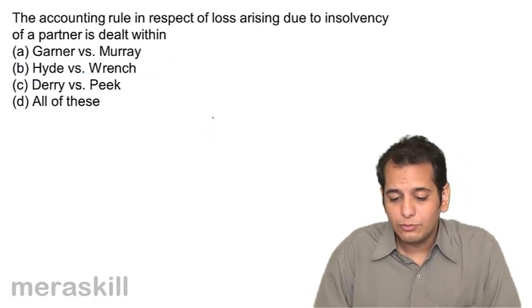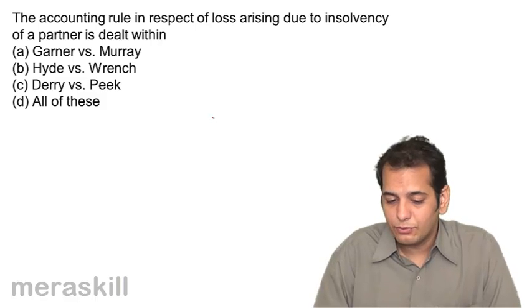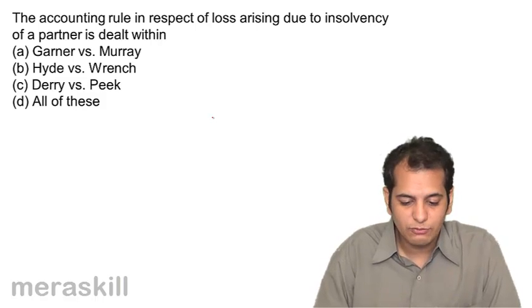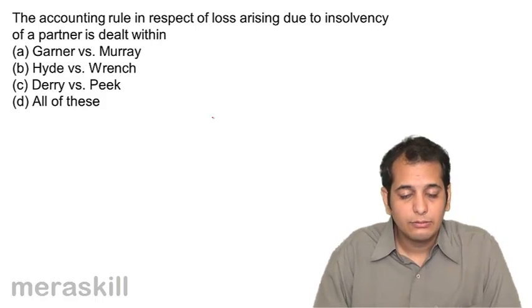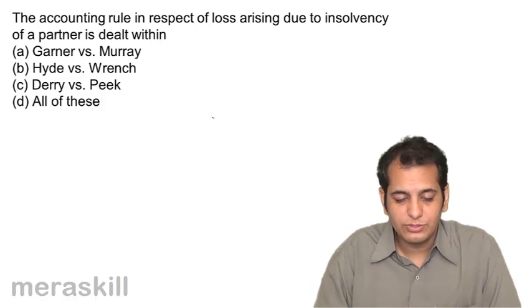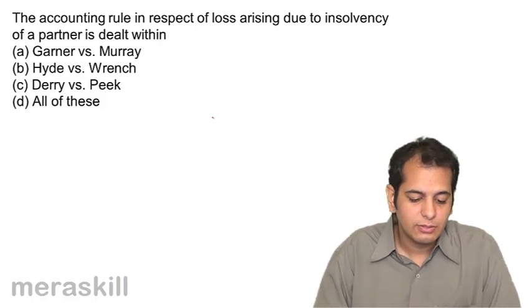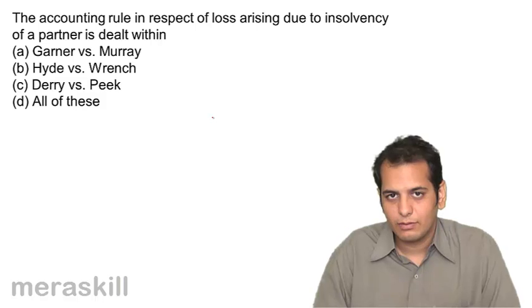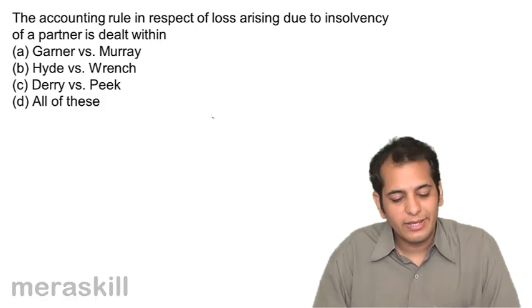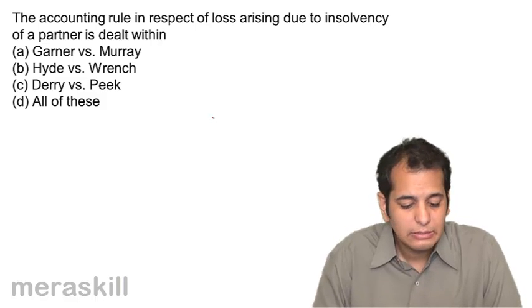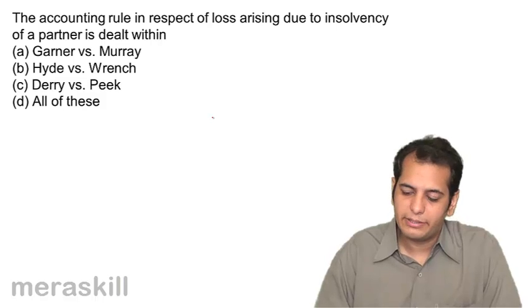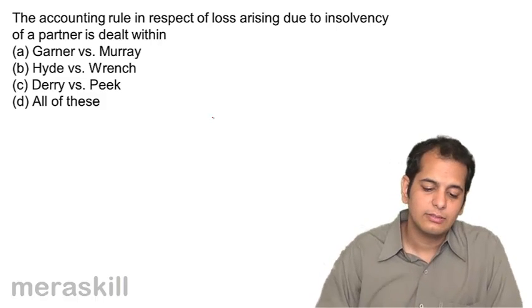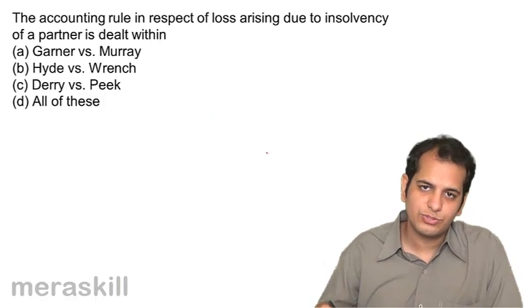Next question: The accounting rule in respect of loss arising due to insolvency of a partner is dealt with in: A. Garner versus Murray; B. Hyde versus Wrench; C. Derry versus Peek; D. All of these. This is very simple — it was decided in the Garner versus Murray case, so the answer is Garner versus Murray.